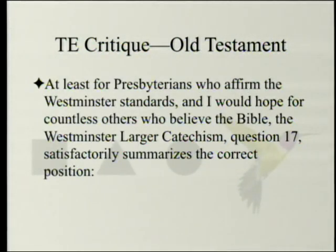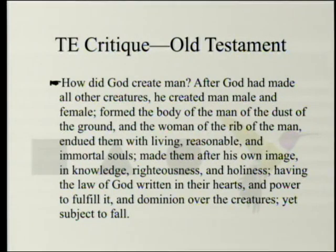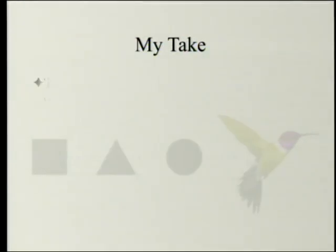At least for Presbyterians who affirm the Westminster Standards, and for countless others who believe the Bible, the Westminster Larger Catechism question 17 satisfactorily summarizes the correct position. 'How did God create man? After God had made all other creatures, he created man male and female, formed the body of man from the dust of the ground and the woman from the rib of the man, endued them with living, reasonable, and immortal souls, made them after his own image in knowledge, righteousness, and holiness, having the law of God written in their hearts and power to fulfill it and dominion over the creatures, yet subject to fall.'